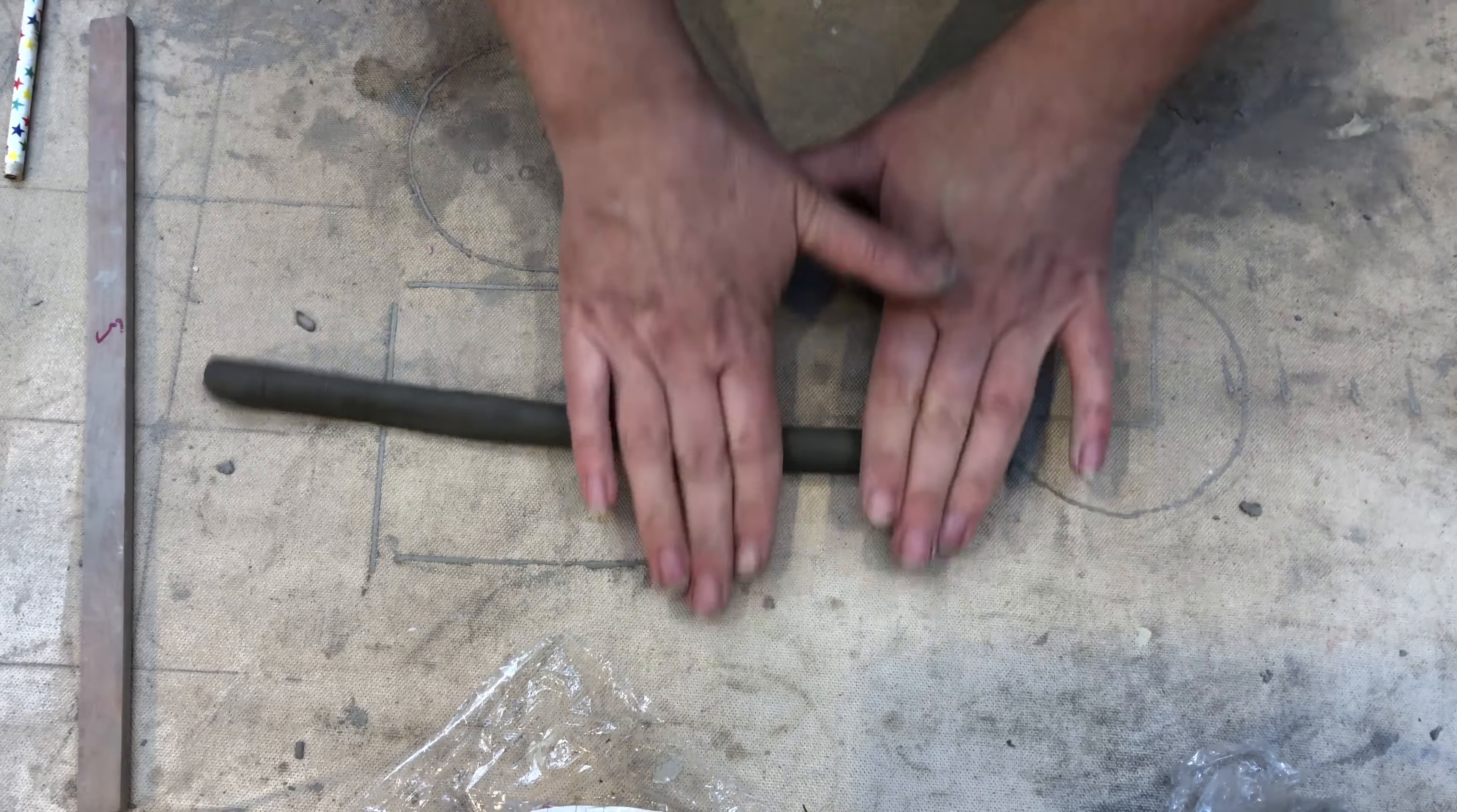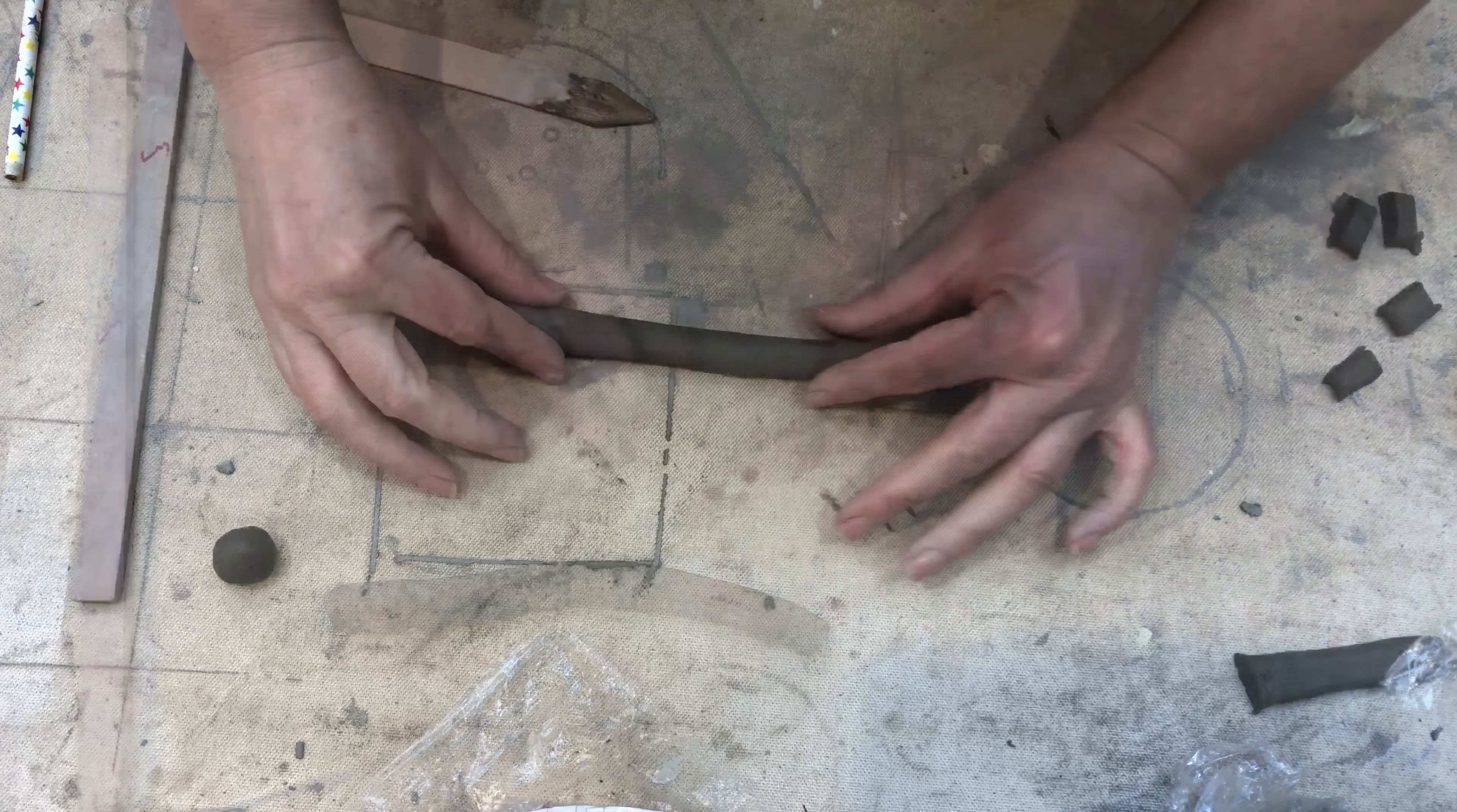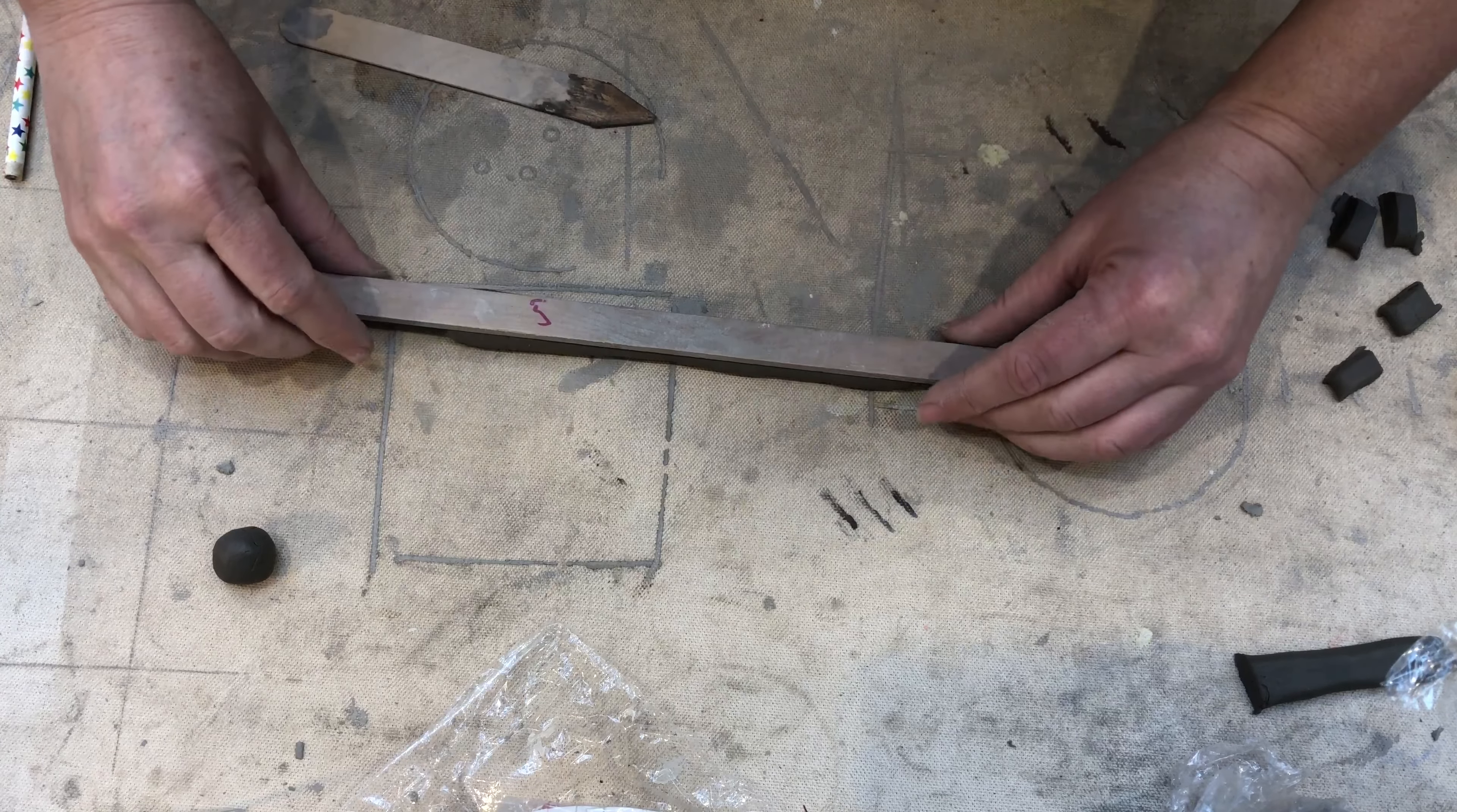So you want the clay about the thickness of your little finger. I'm going to snap it in half again because we don't actually need all of this. Then I place my baton on top and gently squash it down. I'm going to make a flat shape.